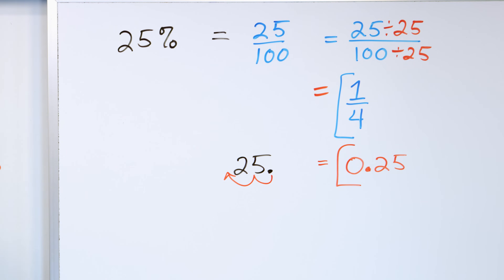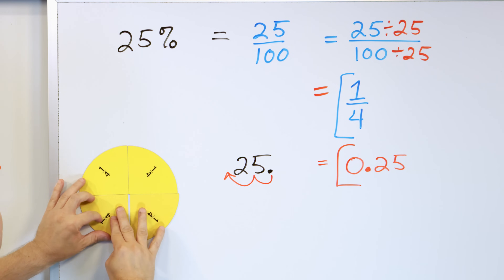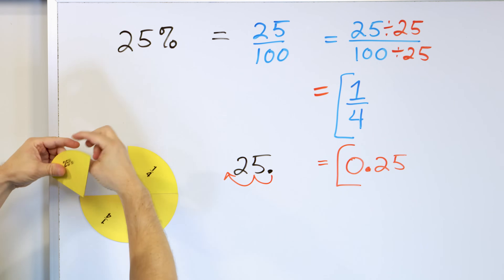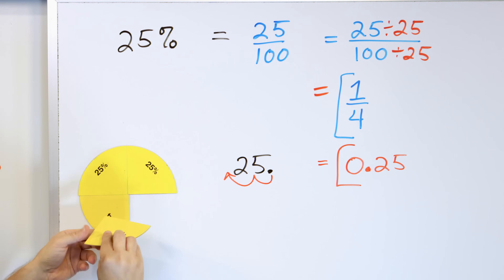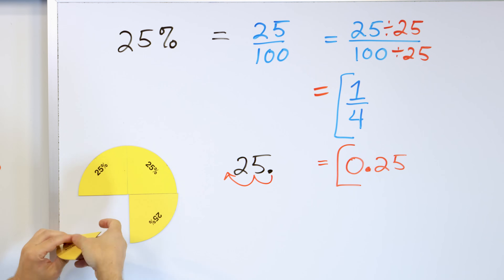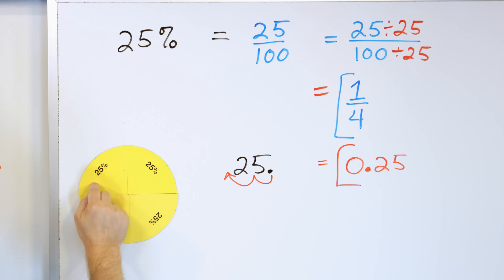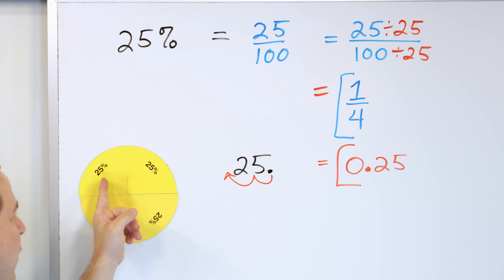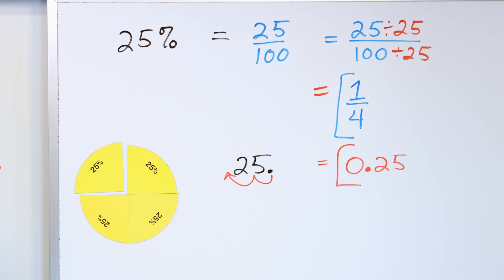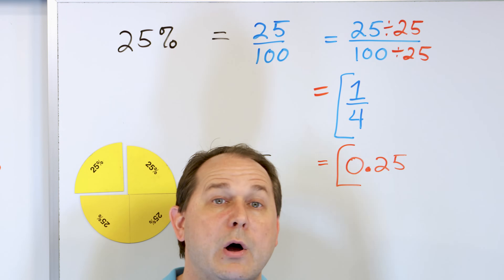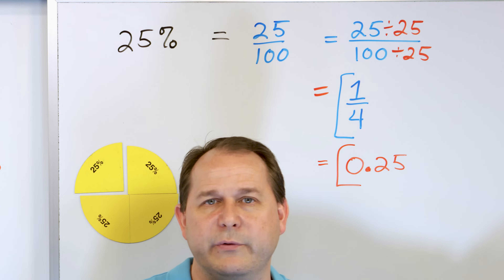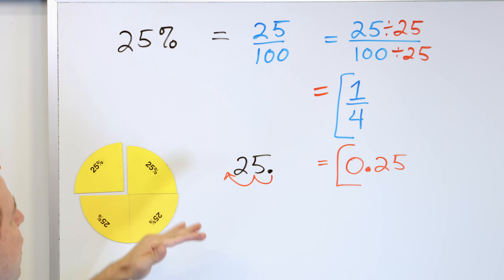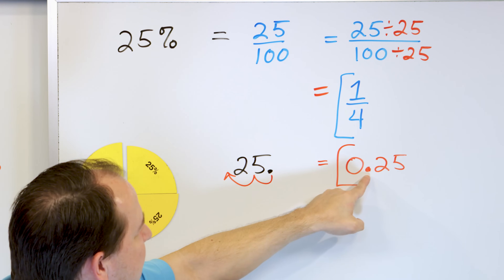So 25% can be written as the fraction 1/4 and as the decimal 0.25 — all three are the same thing. If we build a pizza out of fourths: 1 fourth, 2 fourths, 3 fourths, 4 fourths. Each one fourth is equivalent to 25%. Add all the percentages up and you get 100%, a whole pizza. Notice the numbers in the percentage and decimal are the same — the decimal just moves. And we almost always convert to a decimal before doing multiplication, so we'll use 0.25 in future problems.